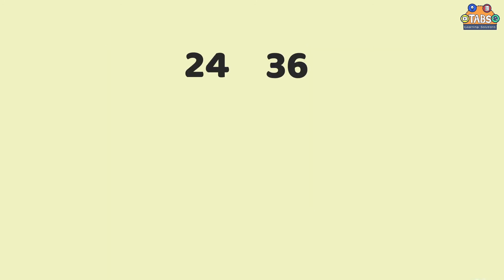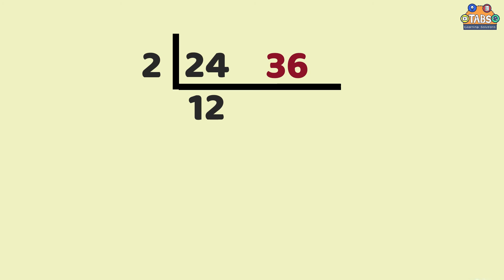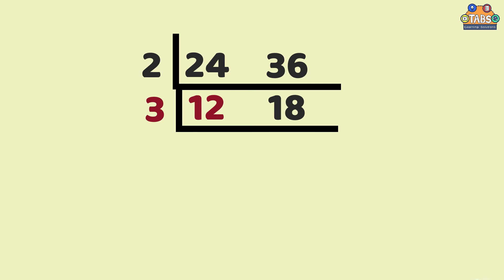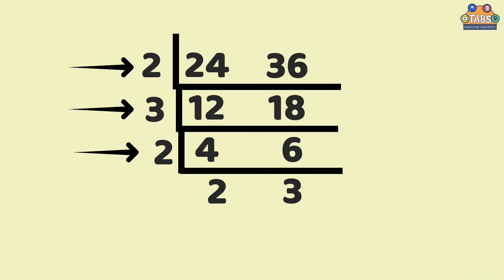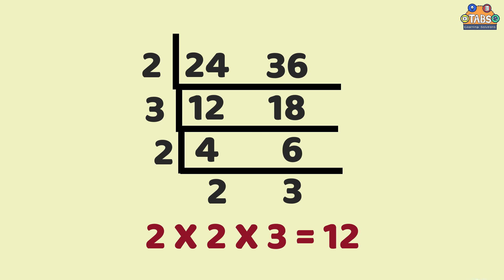Let us take 36 and 24 as an example. Let us divide 24 and 36 by their common factor 2. 24 divided by 2 is 12, while 36 divided by 2 is 18. We can still divide 12 and 18 by 3. 12 divided by 3 is 4, and 18 divided by 3 is 6. We can still divide 4 and 6 by 2. 4 divided by 2 is 2, and 6 divided by 2 is 3. Since 2 and 3 are both prime numbers, we will stop here. To get the GCF, multiply all the divisors on the left. The GCF is 2 times 2 times 3, which equals 12.